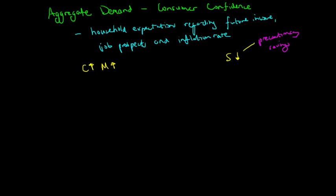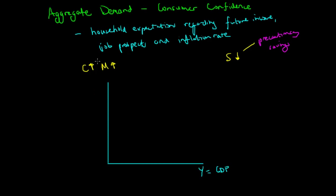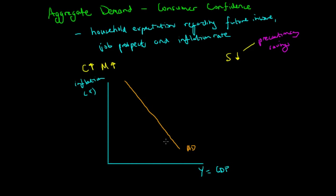Let's see how this affects the aggregate demand curve. This analysis is a little different from microeconomic demand analysis in that the quantity axis is in fact income or GDP, and the y-axis, which was price, is now inflation, which we denote pi. So we have inflation mapped against income, and the aggregate demand curve is downward sloping.